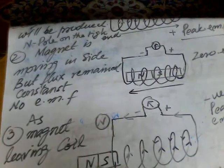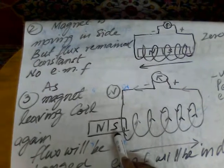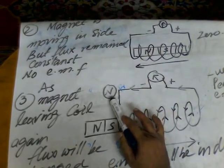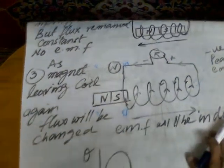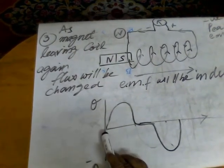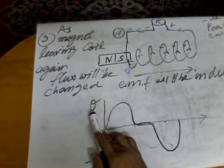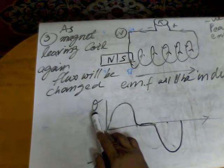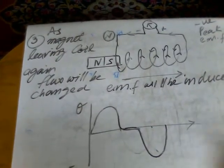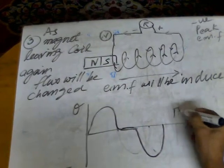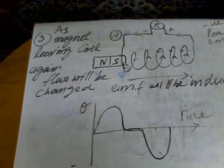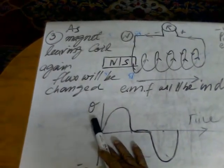As the magnet is leaving, the south pole of the magnet is leaving the solenoid, and this end of the coil will acquire a north pole. Looking at the last figure, which is a graph: theta represents the deflection of the galvanometer. The graph shows deflection of the galvanometer needle against time.